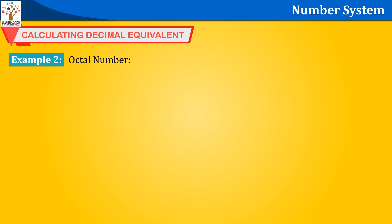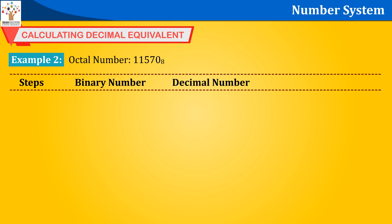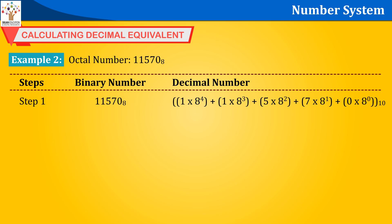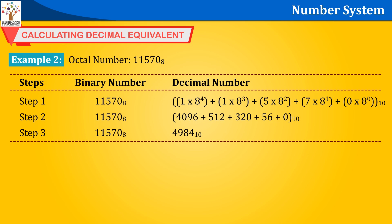Example 2: Octal number 11570 base 8. Step 1: 1×8⁴ + 1×8³ + 5×8² + 7×8¹ + 0×8⁰. Step 2: 4096 + 512 + 320 + 56 + 0. Step 3: 11570 base 8 equals 4984 base 10.